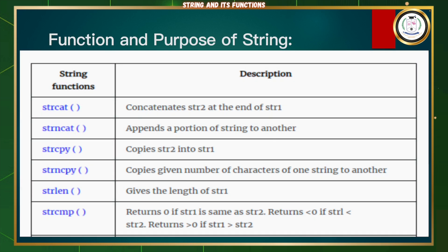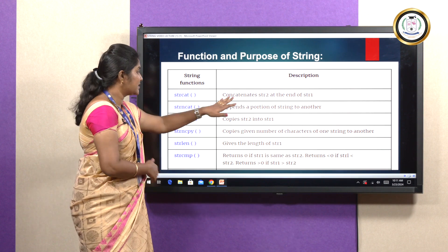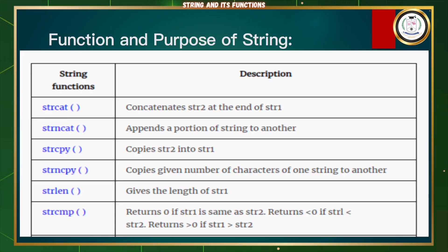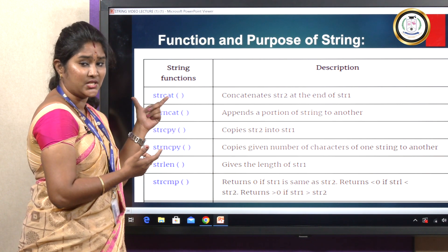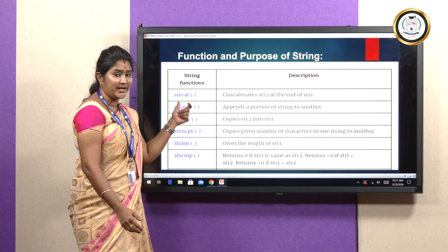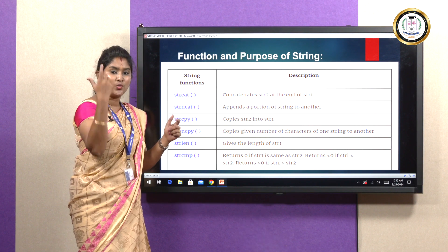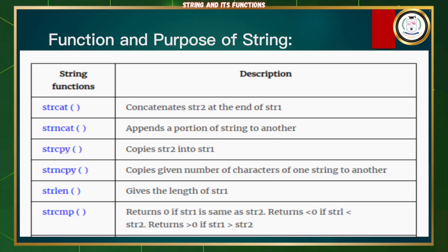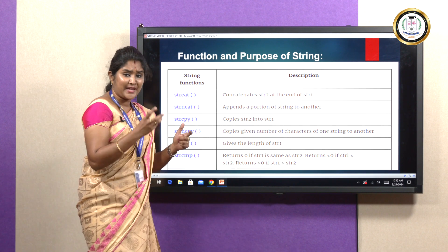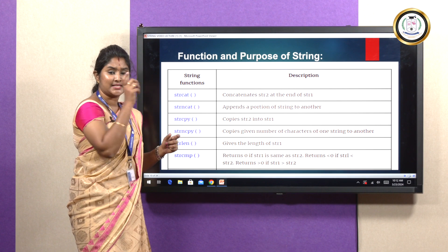Now we are going to see the functions and purpose of strings. There are many string functions available in C. First, strcat: it is a concatenation of two or more strings — concatenating string two at the end of string one. strncat is very similar to concatenation, but we can specify the number of characters to be concatenated with another string. strcpy is used to copy one string to another. strncpy copies a specified number of characters from one string to another. strlen defines how many characters are available in the string — it defines the length of the string.